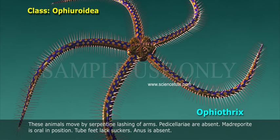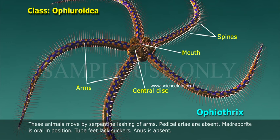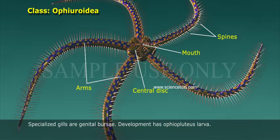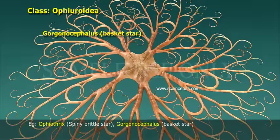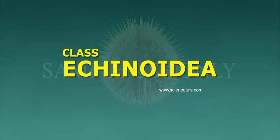Madreporite is oral in position. Tube feet lack suckers. Anus is absent. Specialized gills are genital bursae. Development has Ophiopluteus larvae. Examples: Ophiothrix, the spiny brittle star; Gorgonocephalus, the basket star.